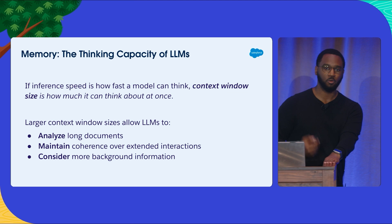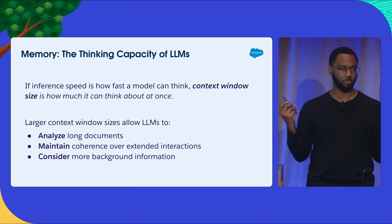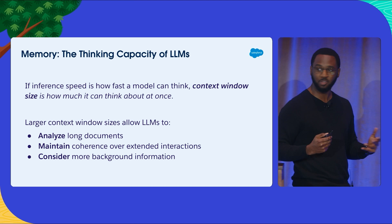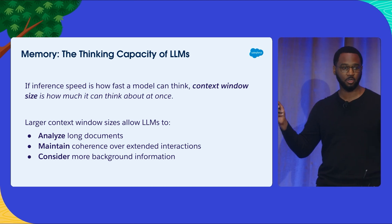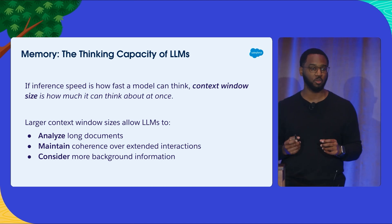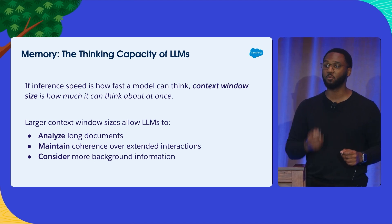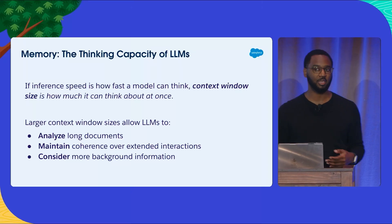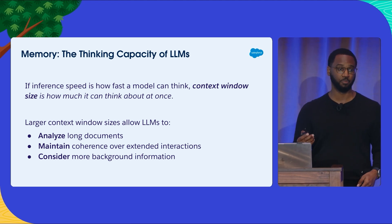Next up is memory. Large language models have a memory, just like we do when we have conversations. In the context of a large language model, this is called the context window size. If you used ChatGPT really early on in early 2023, you might remember that if you talked to it too long, it would start forgetting things — you had hit the context window. You need a large context window if you want to analyze really long documents, have multi-turn chatbots with very long conversations, or summarize all of a customer's support cases to find recurring issues.